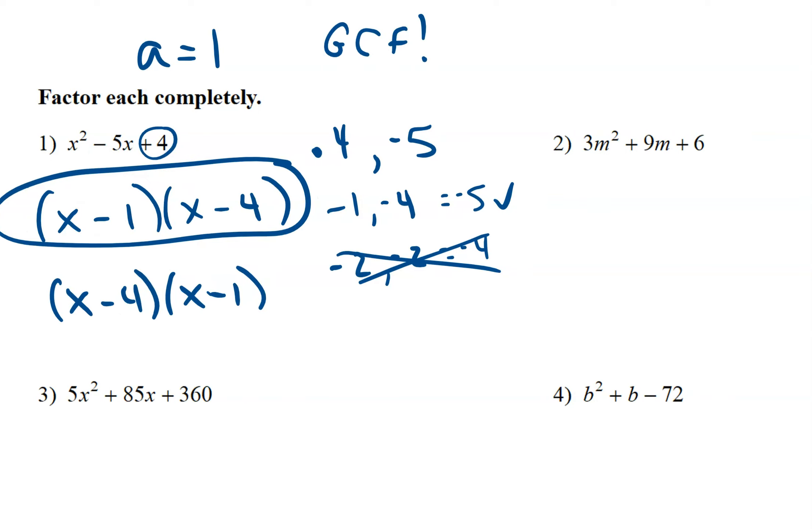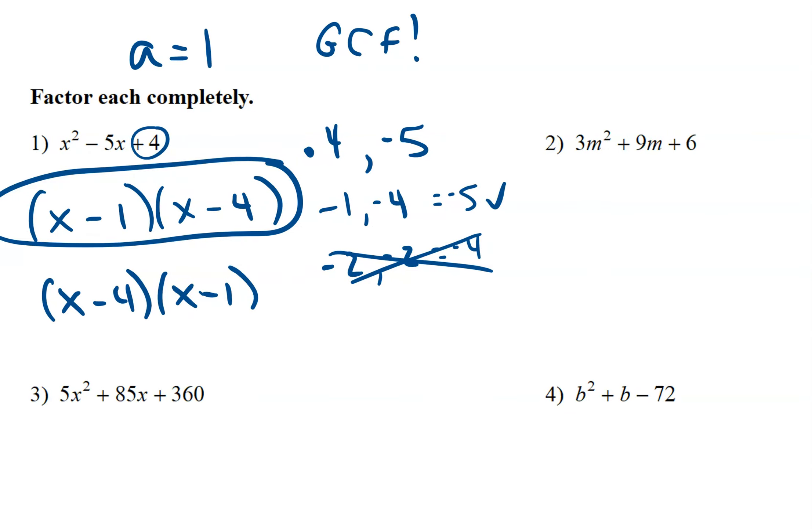On number 2, when we look at number 2, you'll see that a is a 3. So is there a common factor? Yes. 3 and 9 and 6, they all have a 3 in common. So we start by factoring out the 3. So we get m squared plus 3m plus 2.